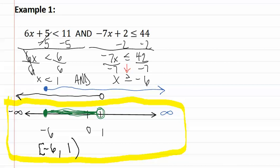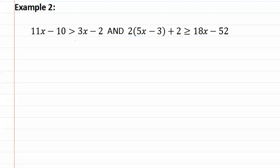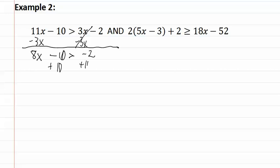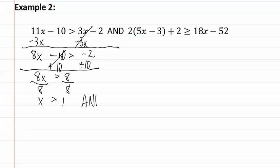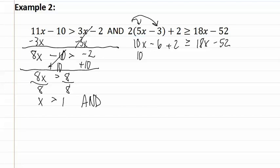Let's look at example two. Starting with the first inequality, we subtract 3x from both sides and get 8x minus ten is greater than negative two. Add ten to both sides and we get 8x is greater than eight. Divide both sides by eight, we get x is greater than one. For the second problem, we need to distribute first, giving us 10x minus six plus two is greater than or equal to 18x minus 52. Combining like terms gives us 10x minus four is greater than or equal to 18x minus 52.